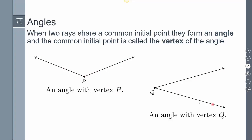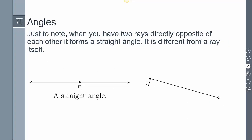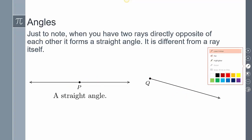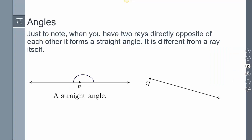This is an example of an angle with vertex P, and this is an example of an angle with vertex Q. Now, there is a difference between a straight angle and a ray. A ray starts at a point and goes on forever. A straight angle, on the other hand, represents some sort of rotation getting to that other ray — two rays going in both directions like that.